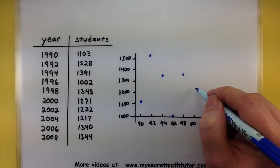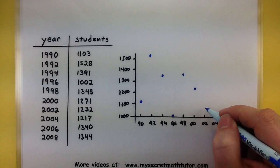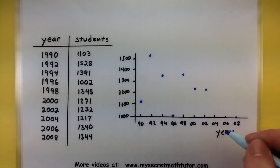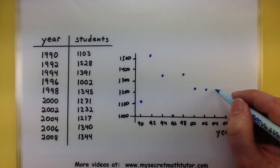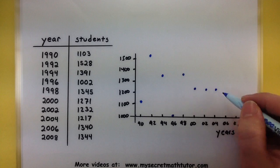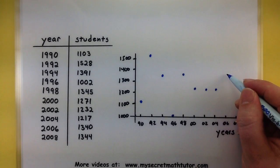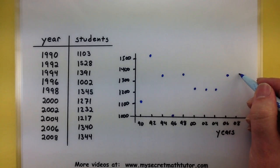Year 2000, 1271, there it looks good. 1232, a little bit shorter than that previous one, not a whole lot. 1217, really close to that 1200 mark. Year 2006, 1340, so just a hair above the 1300 mark. And the year 2008, 1344, so almost the same, but just a little bit larger than our previous top.